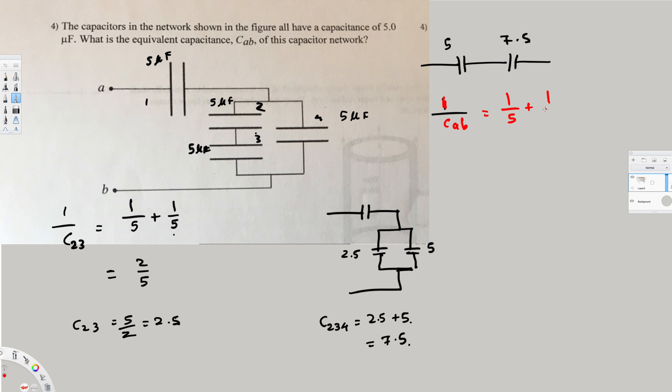plus 1/7.5. We can take 15 as our common denominator. If we take 15 as common denominator, we get 3 here and 2 there, so 5/15, which equals 1/3. Therefore, Cab equals 3